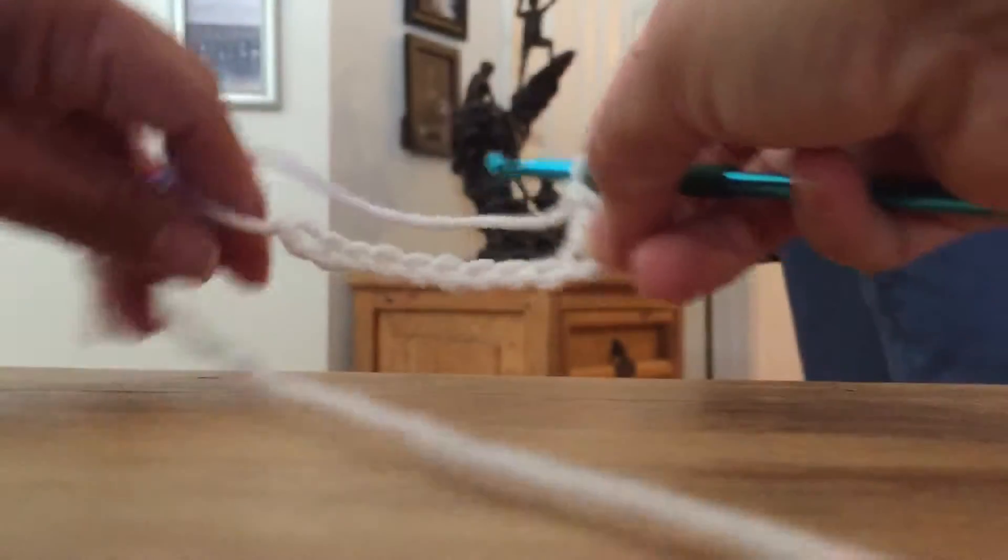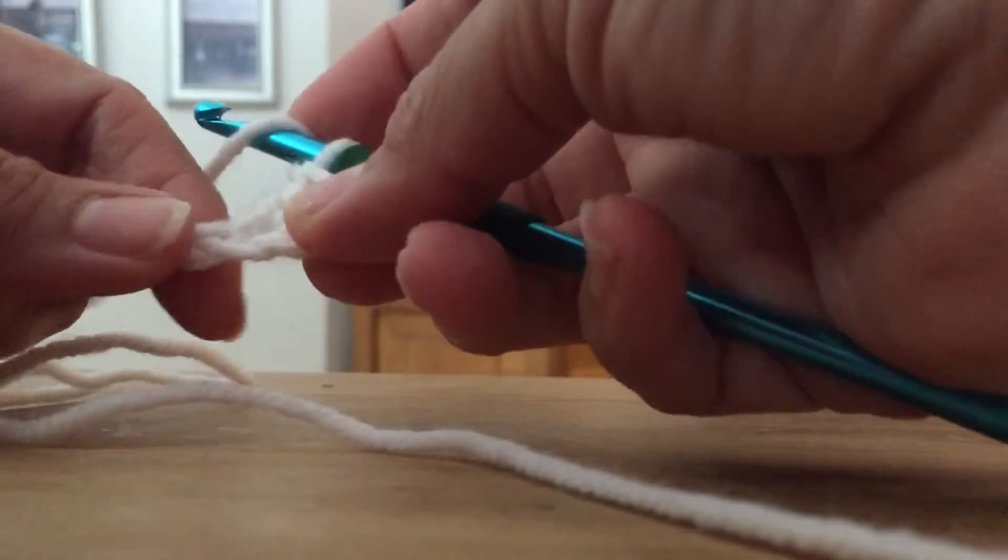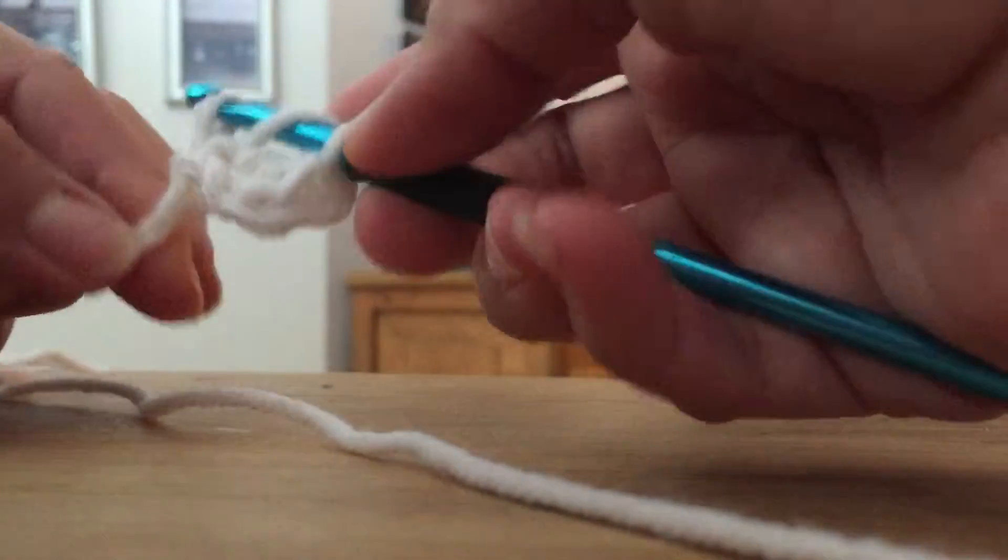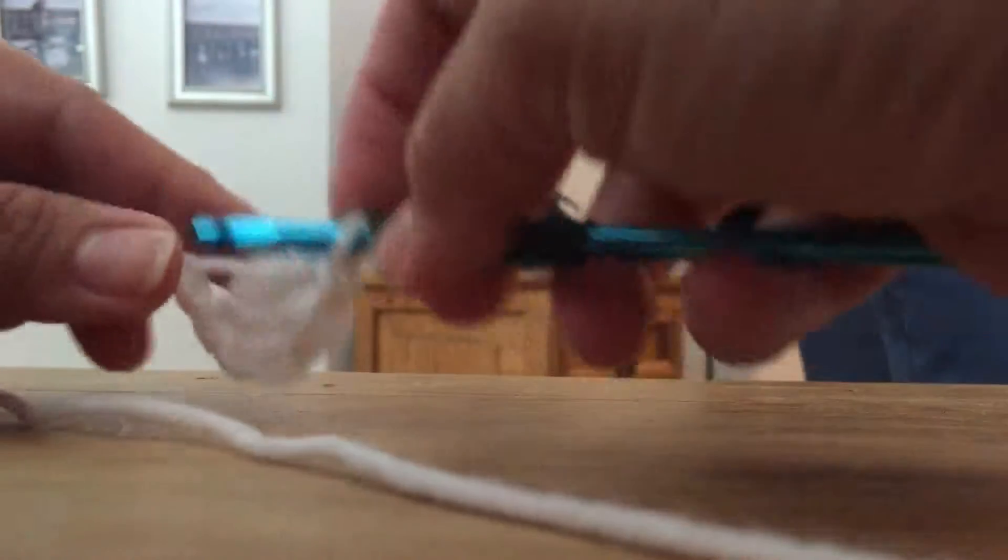It's very hard for me to go slow. So yarn over, through the next chain, pull up the yarn, yarn over, pull two, yarn over, pull two.